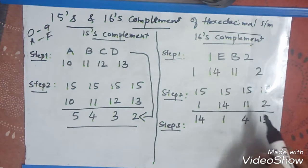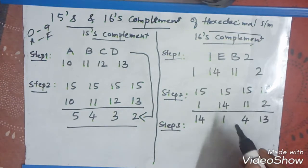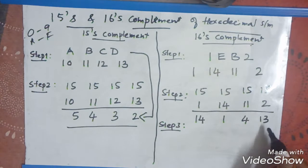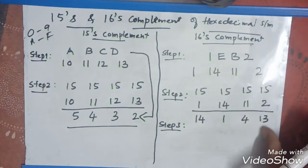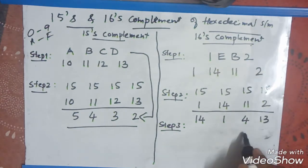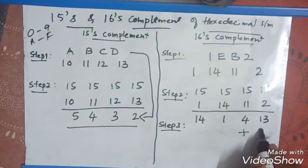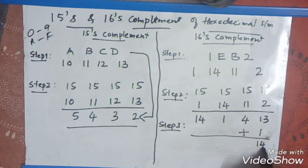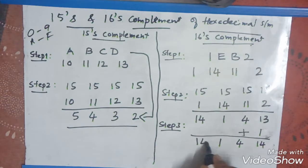We have one more step over here. Now, whatever the answer you are getting, convert it again into the hexadecimal number. 13 is nothing but d. Or, you can write for this is, first, add 1 to get the sixteenth complement. 13 plus 1 is 14. Then, remaining numbers 4, 1, and 14.